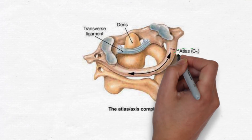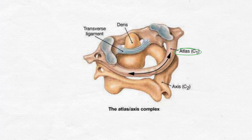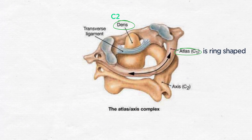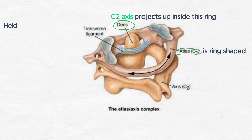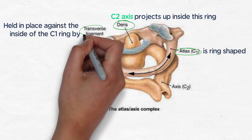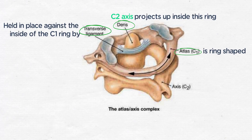You should remember that C1, the atlas, is ring-shaped, and the dens of C2, which is called the axis, projects up inside this ring. It is held in place against the inside of the C1 ring by the transverse ligament.